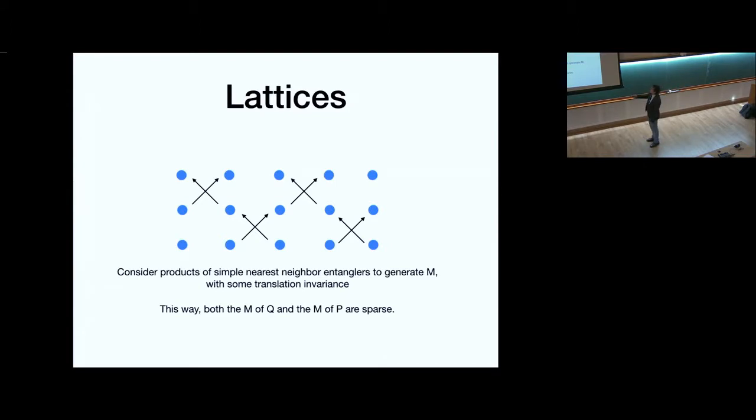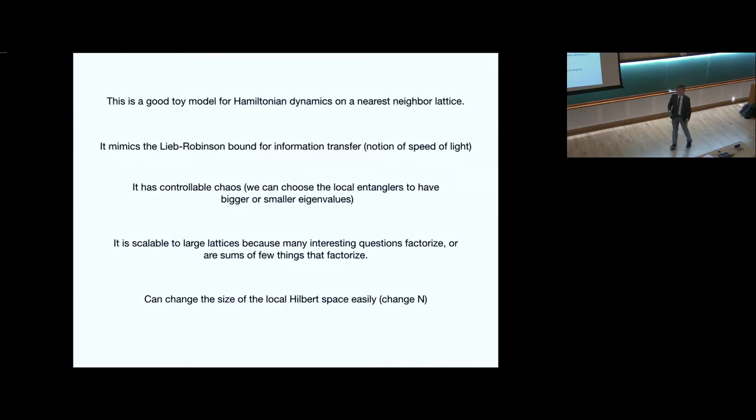Now how do you put it on a lattice? Basically, you consider products of simple nearest neighbor entanglers to generate the full matrix. So you take two of these and you evolve them on the same and you kind of mix them with some M that's your favorite M. And then you do it again on the next row so you can entangle these objects with these objects. And then these two-block sets can be iterated and then this is something that generates the dynamics. And basically both the M of the Q and the M of the P are sparse because the P will also only have this similar structure.